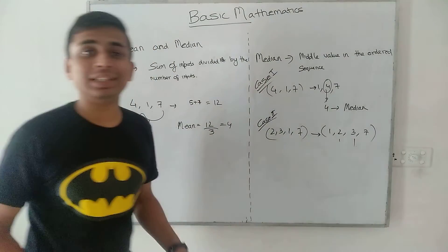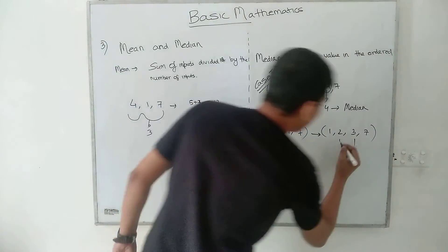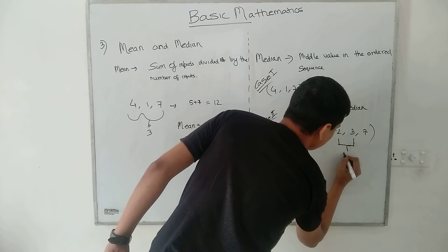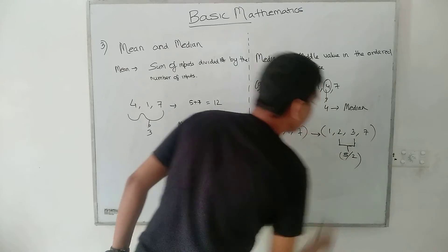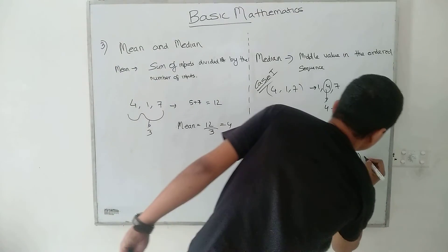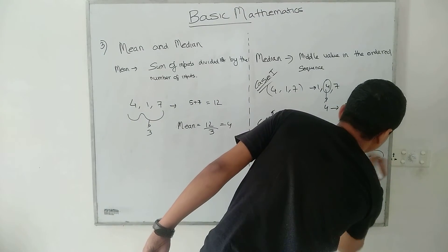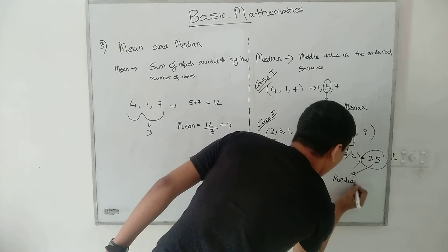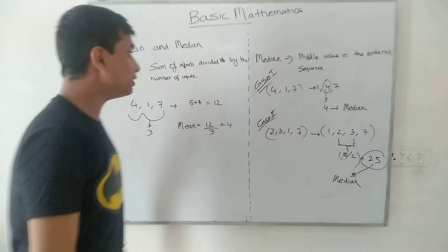So 2 and 3 are both present in the middle of the sequence. What we should do is add them, that is we would be getting 5, and we would be taking a mean of that particular value. So we would be getting 2.5. 2.5 is considered to be the median of such a sequence of numbers where there is no single middle value present.